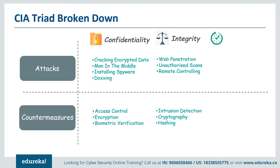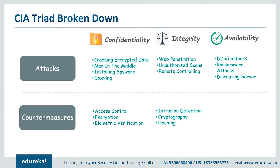Threats to availability include the denial of service attack or distributed denial of service attack, where an enemy floods your computer and internet connection with traffic so that legitimate users can't access any information on the website. There are other attacks as well — for example, ransomware attacks that encrypt data on targeted computers so that authorized parties cannot use it, and deliberately disrupting a server room's power supply so that the servers go offline. A few ways to protect yourself from these attacks are by using antivirus software, installing spyware detection and removal software, and using a firewall.